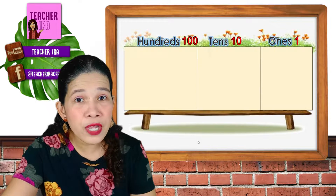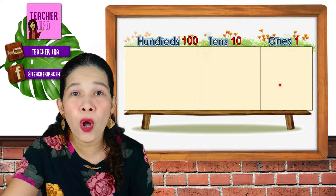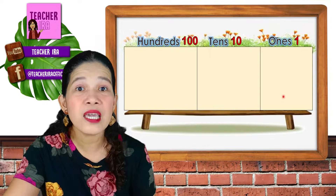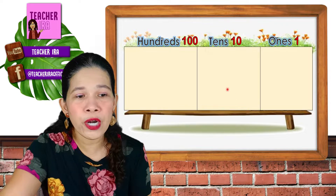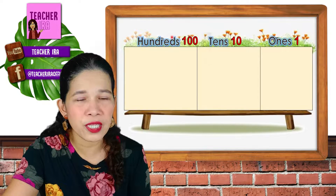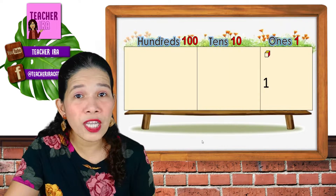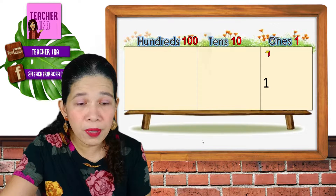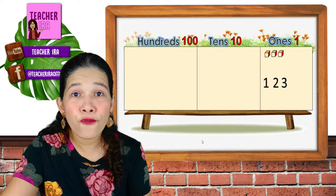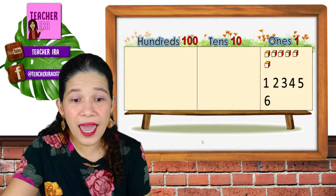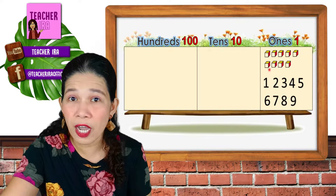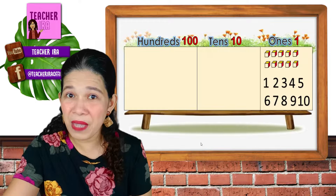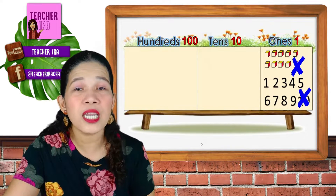Last time, children, we said that there are three place values in the place value chart. We have the 1s — all the digits or numbers at the end are in the 1s place. The second number is in the 10s place, and the first number is in the 100s place. In the 1s place, the value of the number is the number itself, and we count by 1s: 1, 2, 3, 4, 5, 6, 7, 8, 9. If you have 9 blocks, that means 9. We can't add until 10, because only one digit is allowed in each box.